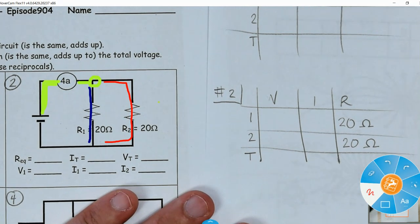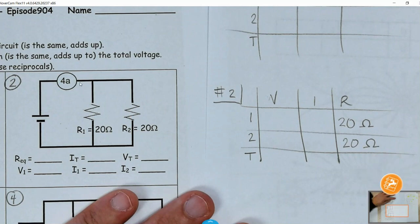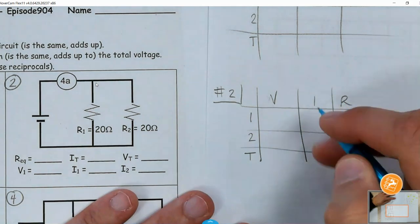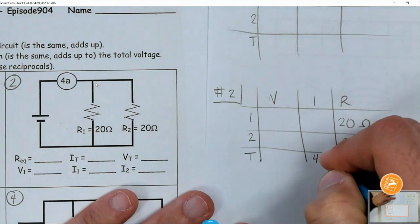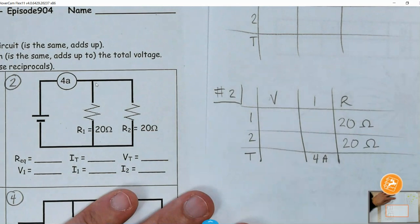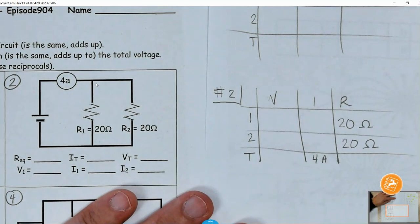Before it gets to that point where it could split, we have the total. So this 4A is going to go for the current total, IT. And that's all the information that we have.